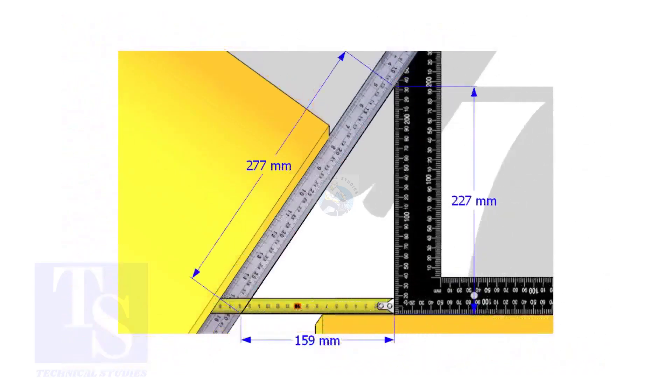Assume that these are the dimensions. Let us calculate the included angle. If you apply the sine rule, the angle will be 159 divided by 277, arc sine.